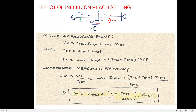This is the simplest network I am considering here for understanding the effect of infeed on reach settings. There are four buses: M, N, T, and P, and sources are available behind buses M, T, and P. Relay RM designates the relay at bus M, which is used for protecting the transmission line connecting the two substations — that is, line MN.